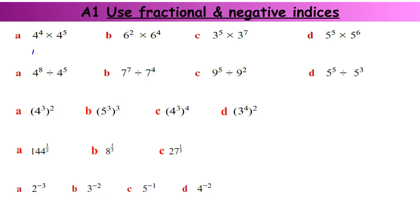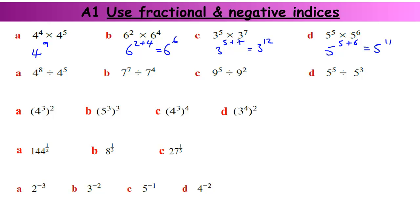4 to the power of 4 times 4 to the power of 5 is 4 to the power of 4 plus 5, which is 9. 6 to the power of 2 times 6 to the power of 4 is 6 to the power of 2 plus 4, which is 6 to the power of 6. 5 to the power of 3 times 5 to the power of 7 is 5 to the power of 3 plus 7, which is 5 to the power of 10. Wait — that's 5 to the power of 5 plus 6, which is 5 to the power of 11.